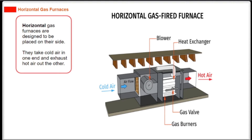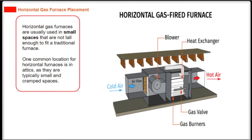Horizontal gas furnaces are designed to be placed on their side. They take cold air in one end and exhaust hot air out the other. Horizontal gas furnaces are usually used in small spaces that are not tall enough to fit a traditional furnace. One common location for horizontal furnaces is in attics, as they are typically small and cramped spaces.